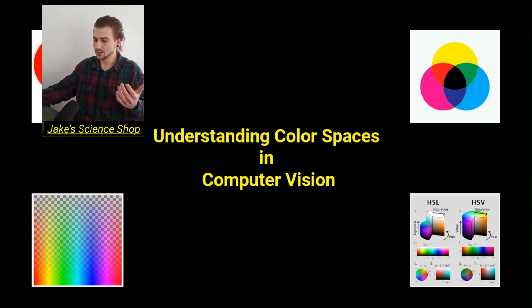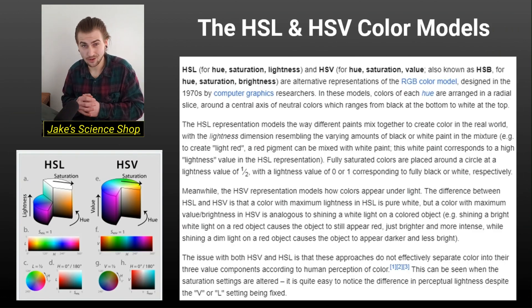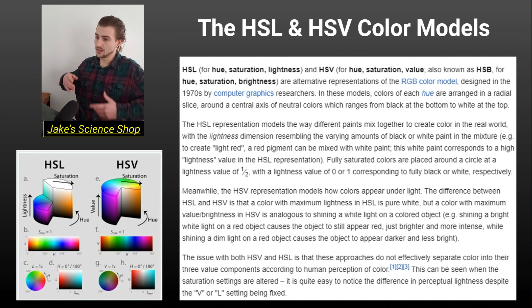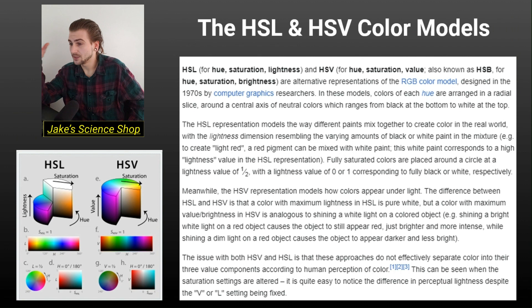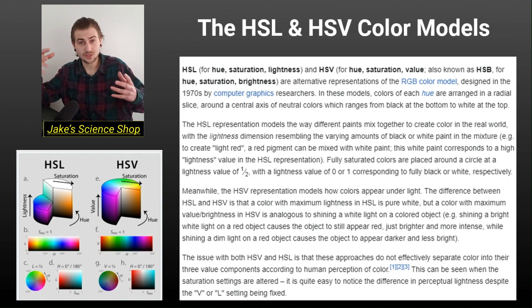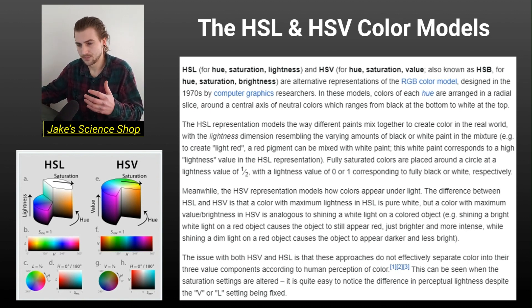We're going to start with the HSL and HSB color models. HSB stands for hue, saturation, value. The HSL representation models the way different paints mix together to create color in the real world with a lightness dimension. HSB does this similarly but models light as we perceive it in the real world. HSL and HSB are slightly different and kind of confusing.